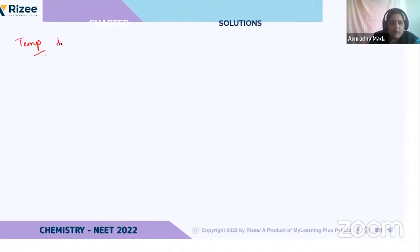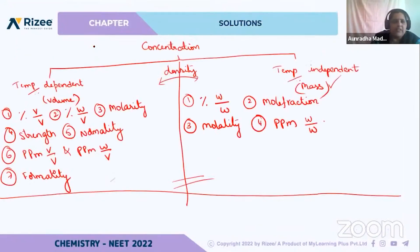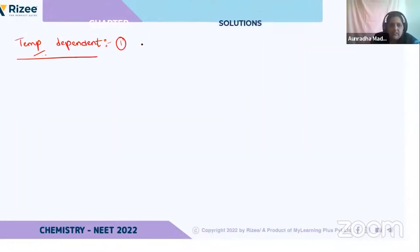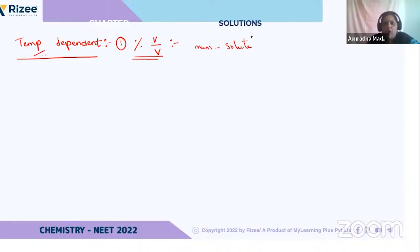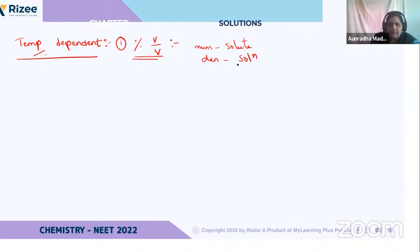The first concentration unit is temperature dependent. Under temperature dependent, the first one is percentage volume by volume. In solution topics, always remember that the numerator value stands for solute — whether volume, weight, or mole fraction, whatever it may be. The numerator stands for solute and the denominator stands for solution. Only one exception exists, which we will discuss later. We always compare solute with solution.